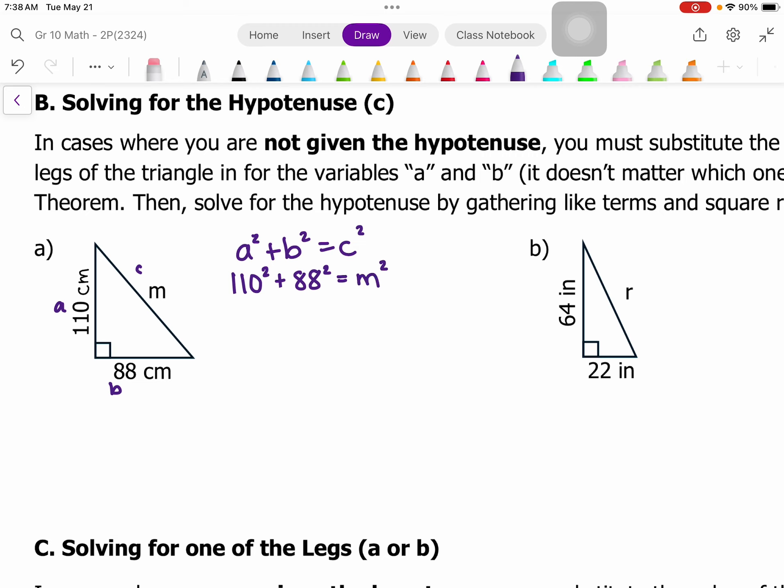So now all I have to do in my calculator is square the 110 and the 88 and add them together. And that is 19,844. So that's what m squared is. But I want to figure out what just m is.